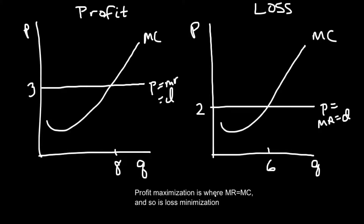We know that profit maximization occurs where marginal revenue equals marginal cost — the additional revenue earned from the last unit produced is just equal to the additional cost. Before we get to that eighth unit, the additional revenue earned on the previous seven units is bigger than the additional cost, so there's no reason to stop at one, four, or seven units. We want to keep going until we hit that eighth unit because our profits are growing as long as marginal revenue is greater than marginal cost.